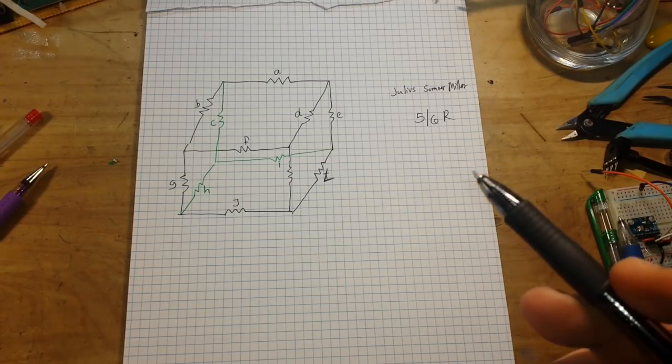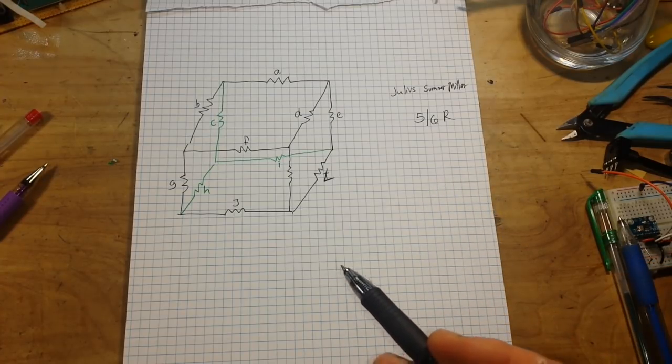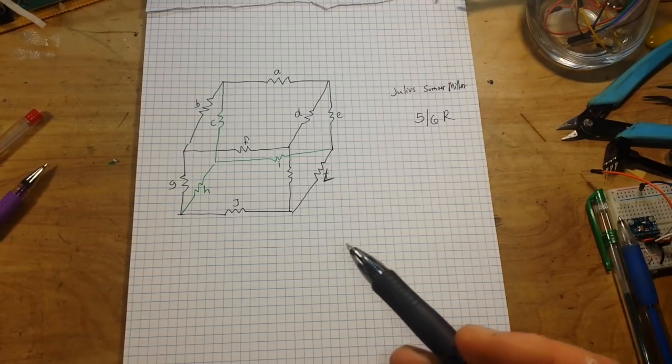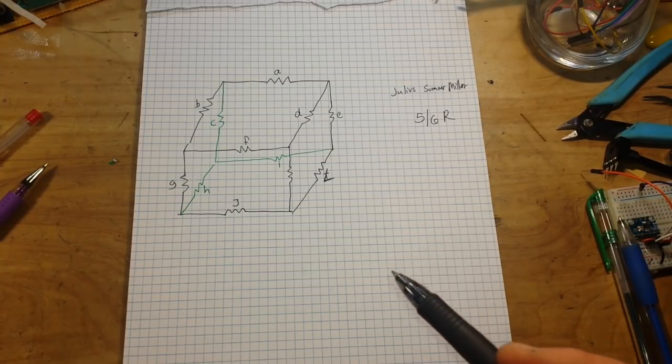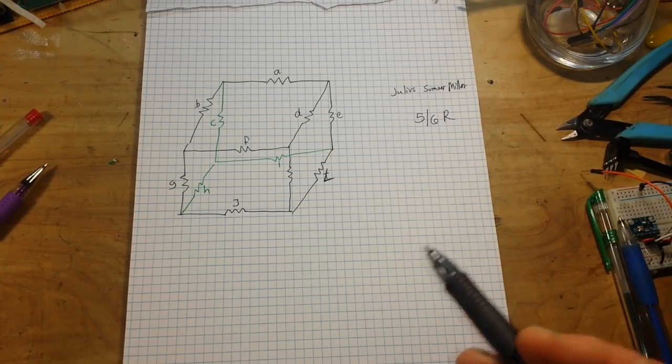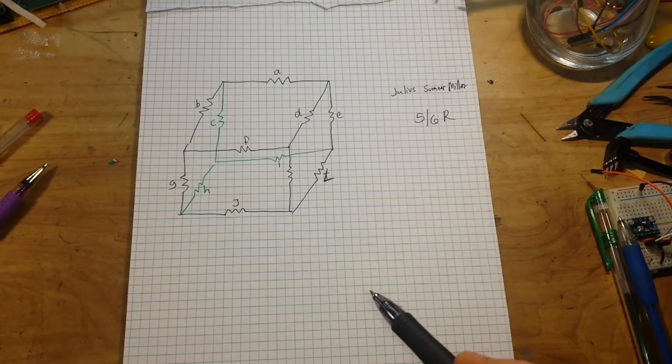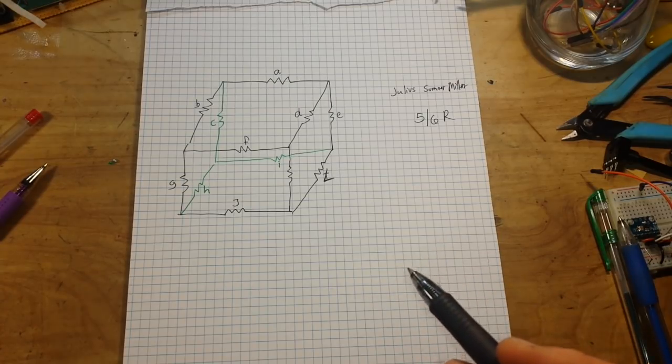So due to symmetry, the potential at three nodes are equal. Since no current flows between nodes with a potential difference of zero, they can be shorted together without affecting the circuit's integrity. This is Kirchhoff's current law.